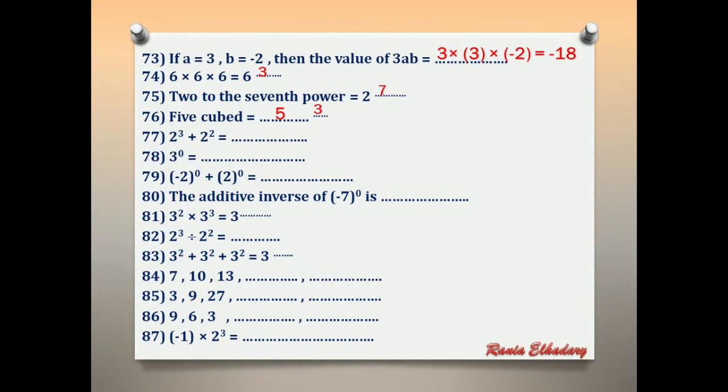Number 77: 2 power 3 plus 2 power 2. We have a plus sign, so keep the plus in the middle. Calculate 2 power 3 equals 8, plus 2 power 2 equals 4. 8 plus 4 equals 12.